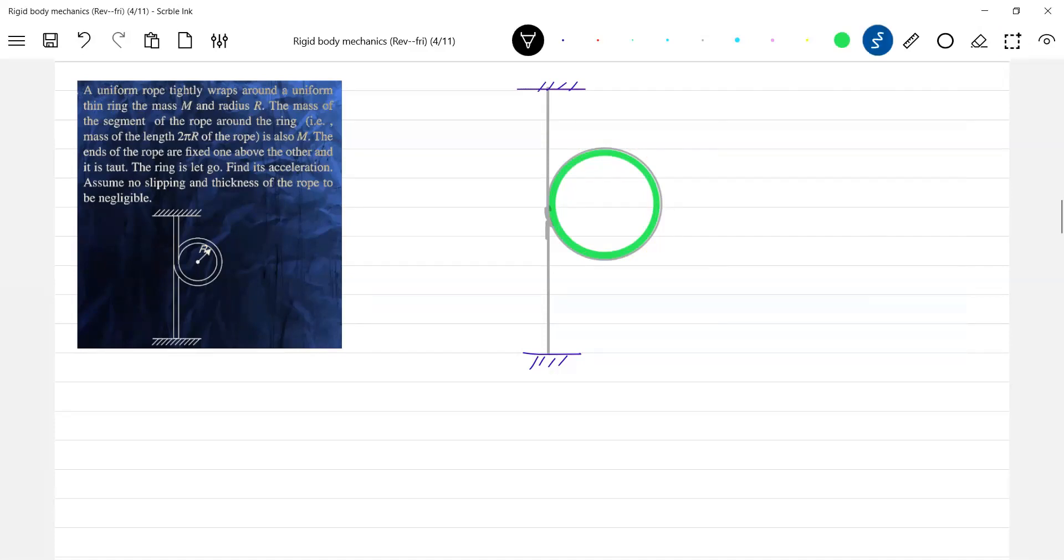There is a rope. This part is the rope. Here also we have rope and there is a ring. This is actually the thing. The rope that is wound on the ring will have a mass M and the ring is having a mass M.